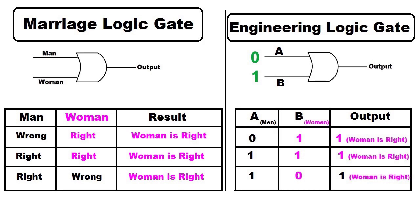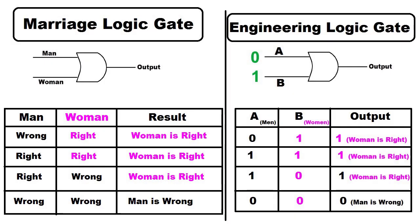Third case, again the man is right and woman is wrong. Even in this case also woman is right in the output because whatever they do, they are right. Finally, man is wrong and woman is also wrong.